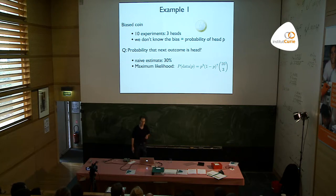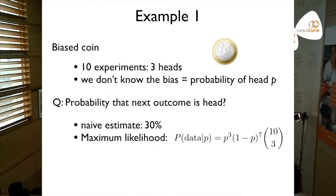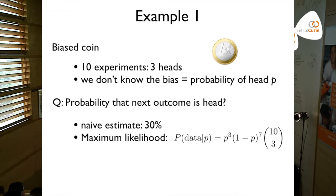If you do a naive estimate, you say it's 30% — three times out of ten I got heads, so the probability that the next one is heads is also 30%. And in fact, if you apply the principle of maximum likelihood — you write the probability that you have the data given p, which is just given by the binomial distribution, and you maximize over p — you find 30%. So that's the naive estimate.